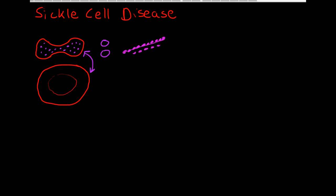When this happens, it stretches out the cytoplasm of the cell, so it loses its nice pliable biconcave disc shape and becomes a rigid, sharp sickle shape. These sickled cells don't flow through blood vessels very well.